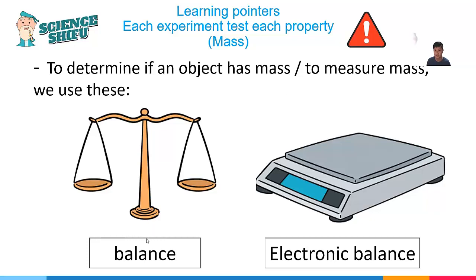One such example would be the balance. If you put an object here and an object on the other side, if this balance is horizontal, it means that the mass of the two objects are the same. But if one is tilted down and the other one goes up, that means one object is heavier than the other. For the electronic balance, quite straightforward, you put the object there. And if the electronic balance shows a reading, that means the object has mass.